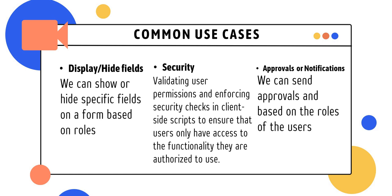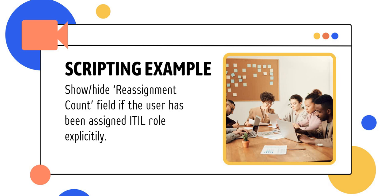Now the common use cases for g_user object: First, showing or hiding specific fields on a form based on roles — for example, showing a field only to admin users and hiding it from non-admins. Second, security — validating user permissions or enforcing security checks in client-side scripts to ensure users only access functionality they are authorized for. Third, approvals or notifications — sending emails or firing events based on user type, such as sending notifications only to itil users or non-itil users.